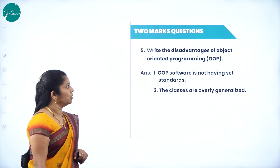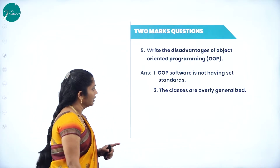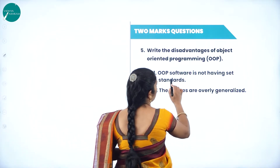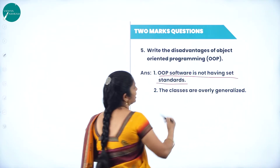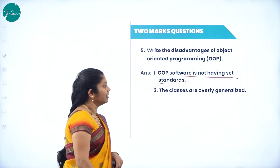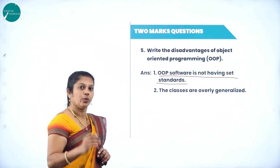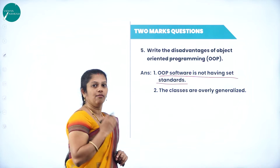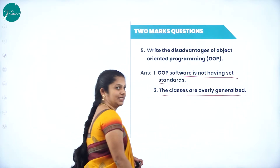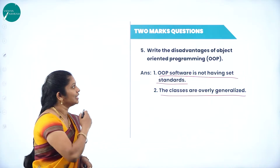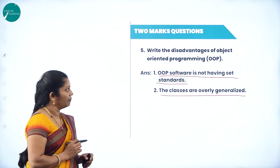For two marks, you may expect the question: write the disadvantages of object-oriented programming. OOP software does not have a set of standards. If you want to write a flowchart for the OOP concept, it is very difficult, and it does not have a set of standards. Also, classes are overly generalized.